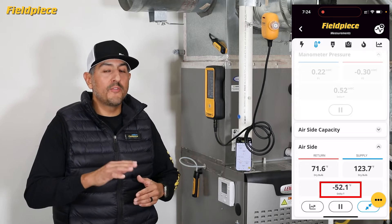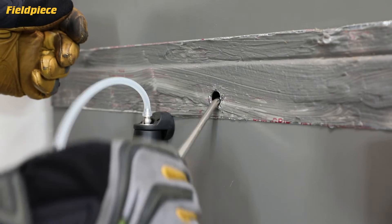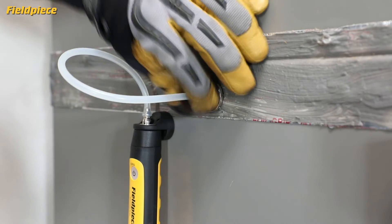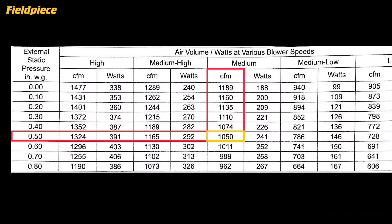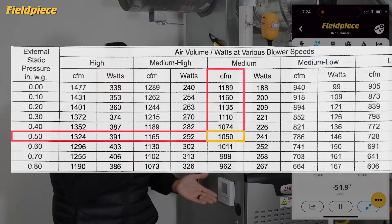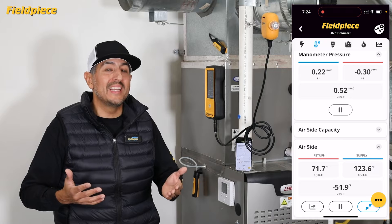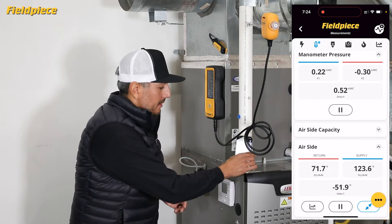On the airflow side, you can use a couple of JobLink wireless manometers to measure the total external static pressure, and look up the manufacturer's blower data tables. Knowing that this fan is set to medium right now, I see that my estimated CFM is 1050.